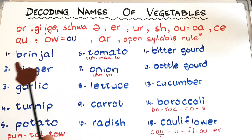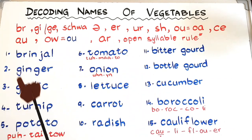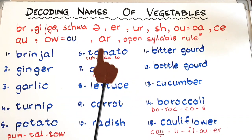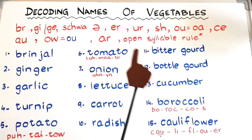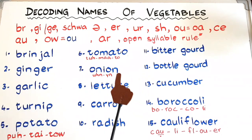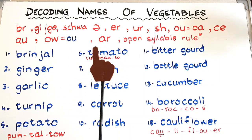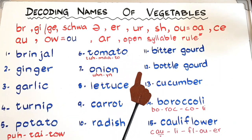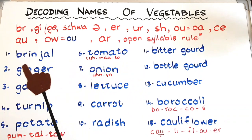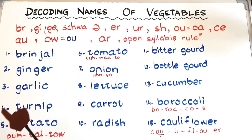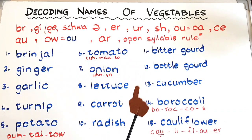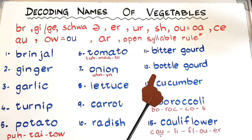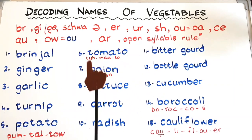Before we go any further, let me tell you one thing: if you want to teach spelling or if you want your kids to memorize these spellings, you must work on their base first. They should have good phonological awareness before they go to write the spellings of things in the bedroom, the classroom, or the names of vegetables, animals, or fruits.